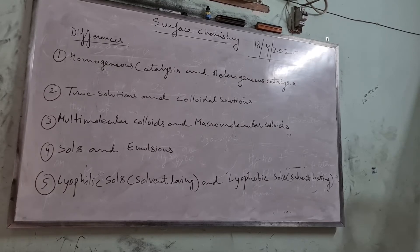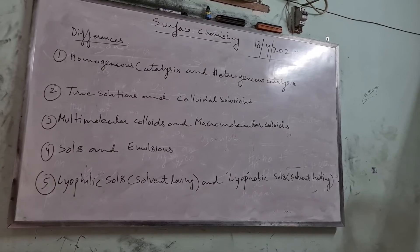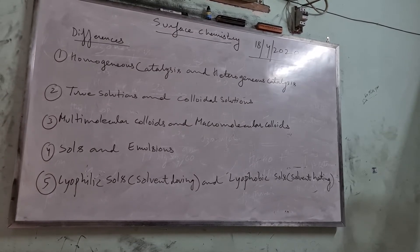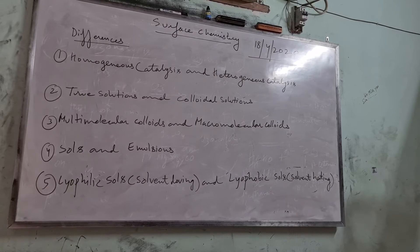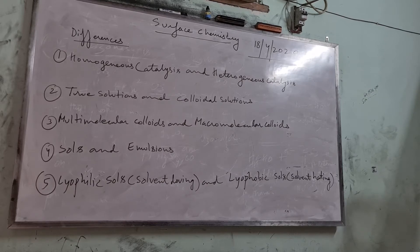Today I am going to discuss five differences. The first is the difference between homogeneous and heterogeneous catalysis. In homogeneous catalysis, the catalyst has the same phase as the reactants — either both in liquid phase or both in gaseous phase. In heterogeneous catalysis, the catalyst is always in a different phase compared to the reactants.